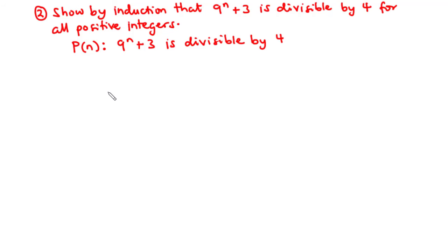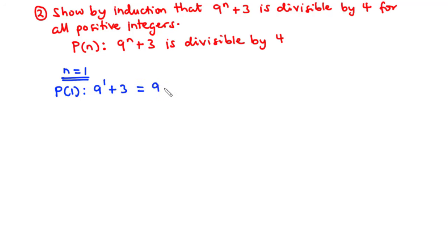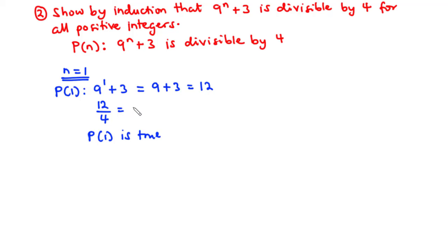First, we need to prove the statement is true for the first term, that is when n equals 1. So for step 1, when n equals 1, we have P(1): 9^1 plus 3 equals 9 plus 3 equals 12. Since 12 is divisible by 4, we say that P(1) is true, as 12 divided by 4 equals 3, which is an integer.